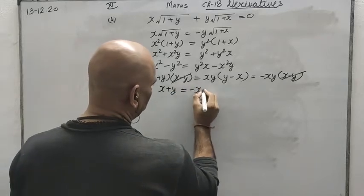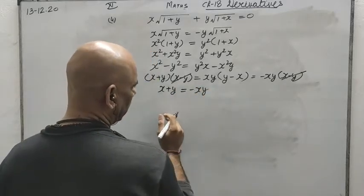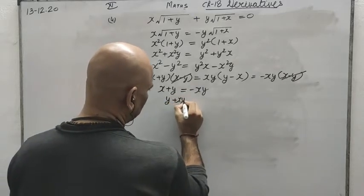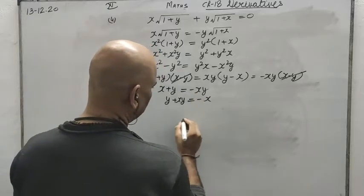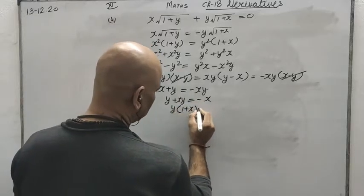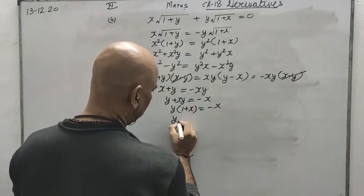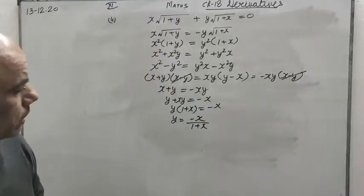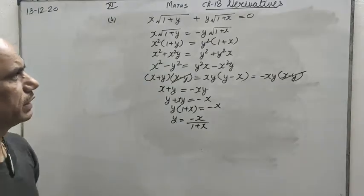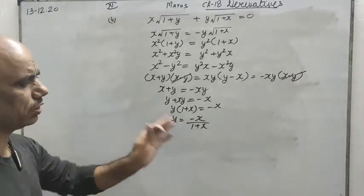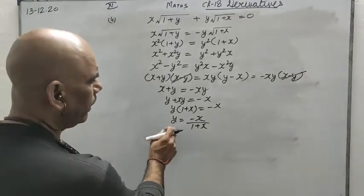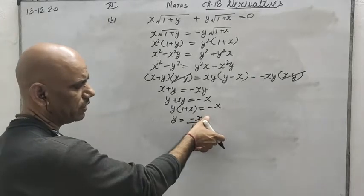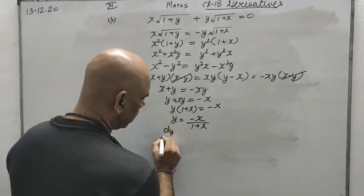From x plus y equals minus xy: bringing minus xy to the left, y plus xy equals minus x, so y(1 plus x) equals minus x, giving y equals minus x upon (1 plus x). Now finding the differential is easy because the right side contains only x — there is no y. We simply apply the division formula to find dy by dx.